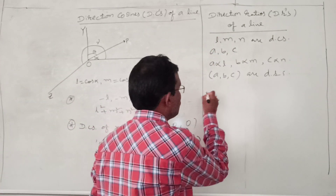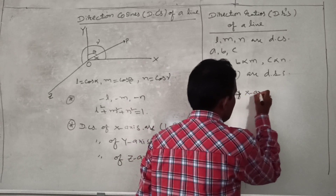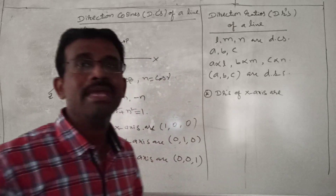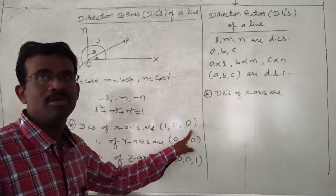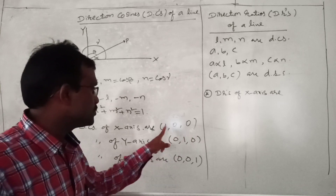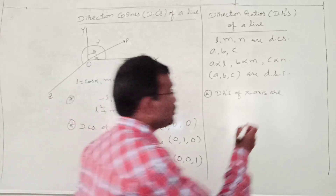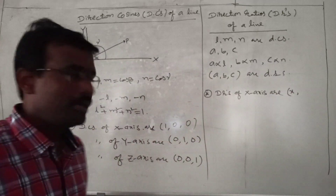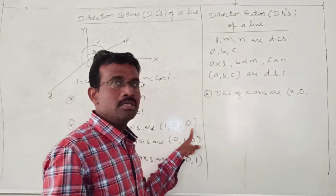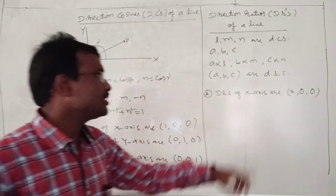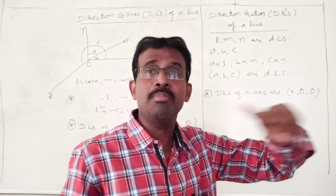Now let us see direction ratios of the coordinate axes. For direction ratios of the X axis, the direction cosines of the X axis are 1, 0, 0. Any number proportional to 1 gives small x, and proportional to 0 gives 0. So direction ratios of the X axis are x, 0, 0 — where small x is any real number. Similarly, direction ratios of the Y axis are 0, y, 0.